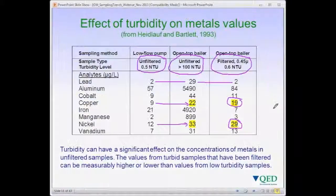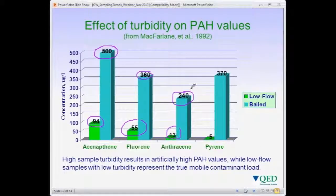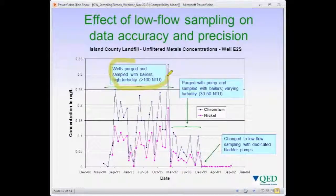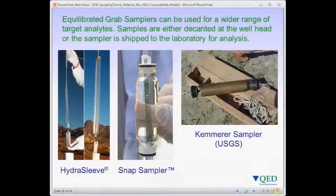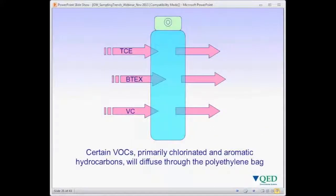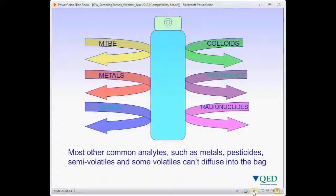We'll discuss the evolution of purging practices and the movement into low-flow purging and sampling from the traditional methods, including some of the advantages and limitations of that methodology. We'll also go into passive and no-purge sampling methods, the devices used for these applications, and again discuss the advantages and limitations of this methodology and these devices.